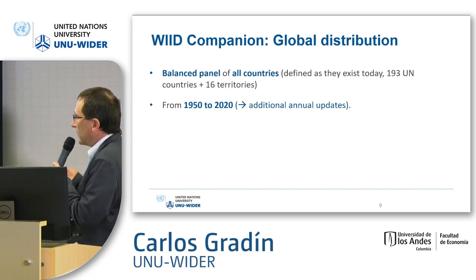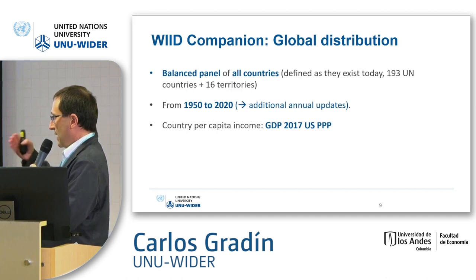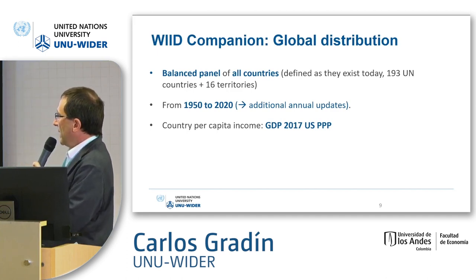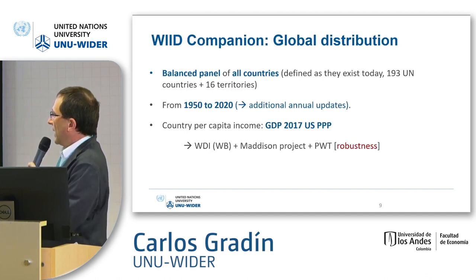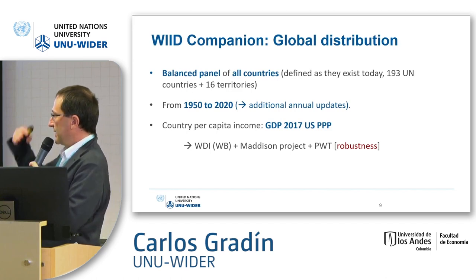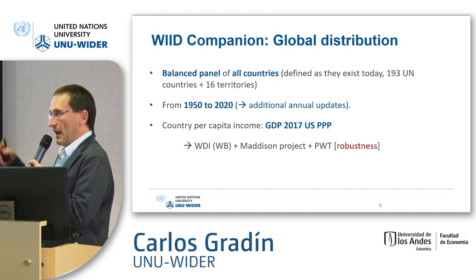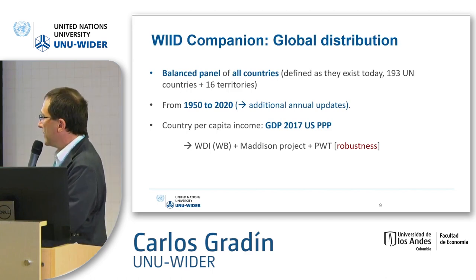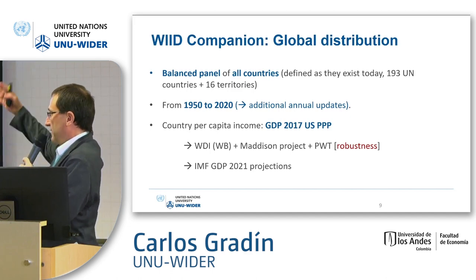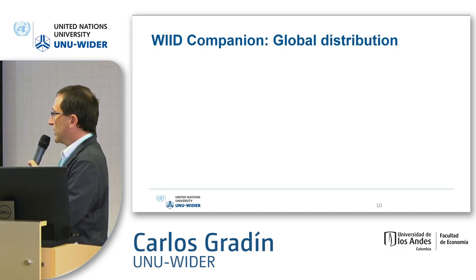We end up with a balanced panel of countries from 1950 to 2020, updated annually with new information. For average per capita income, we use GDP in PPPs, primarily from the World Development Indicators since 1990, reconstructed backwards or for missing countries using the Maddison Project or Penn World Tables. Importantly, changing the income source can affect inequality trends in specific periods, as I will show later. The study also includes projections for 2021–2027 using IMF GDP projections, though these are not part of the core database.